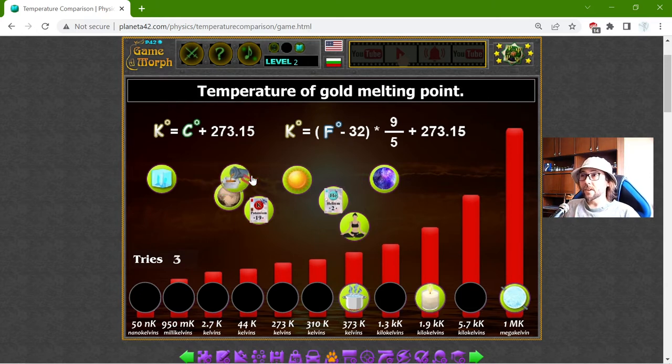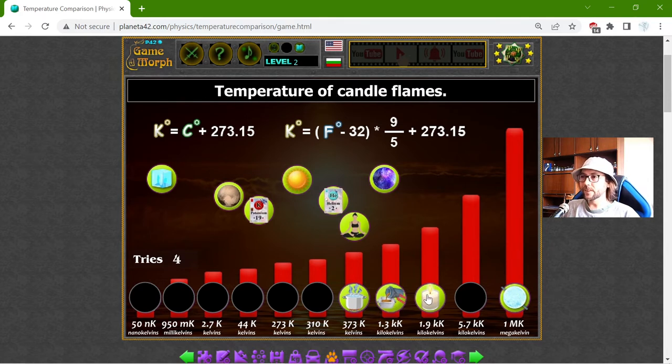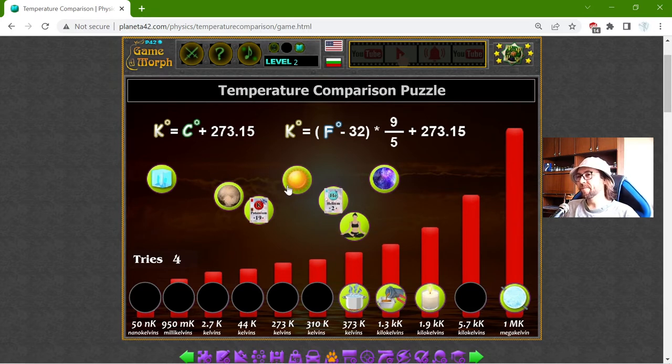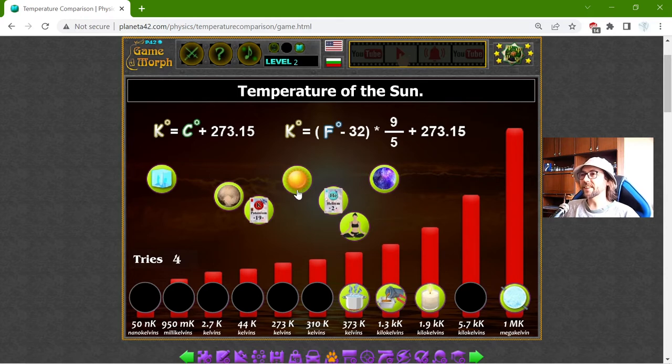Okay, the temperature of gold melting. That should be 1.3 KK, which means we can melt gold on a candle. Is that true? Maybe it is. Because one day I have to make these physical experiments.